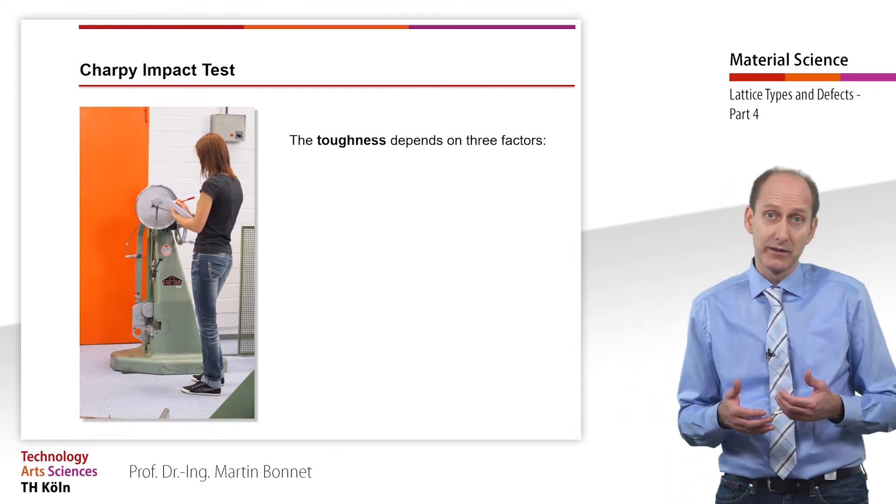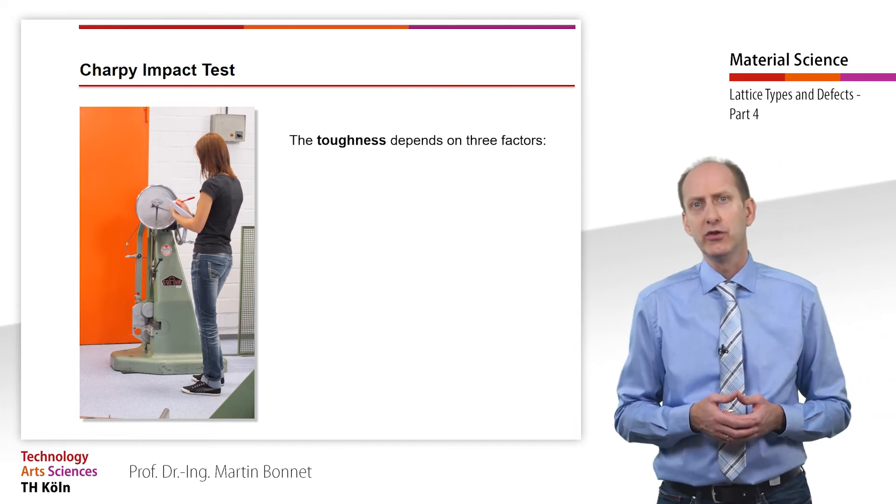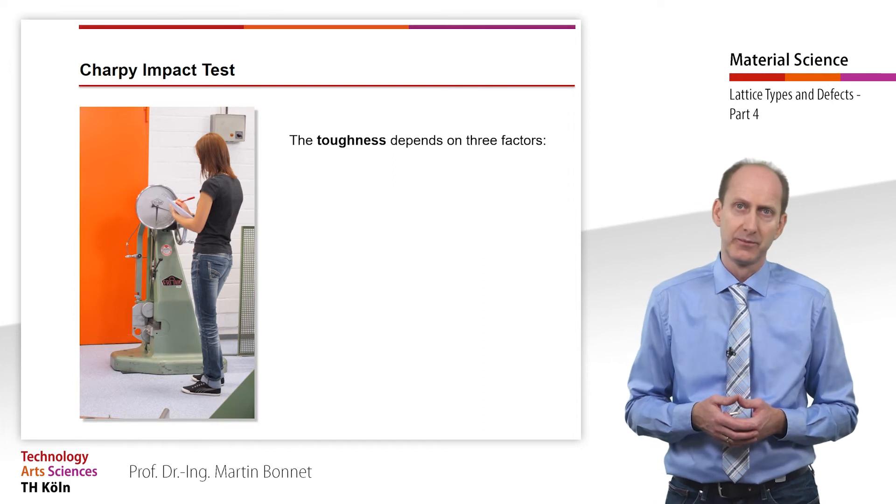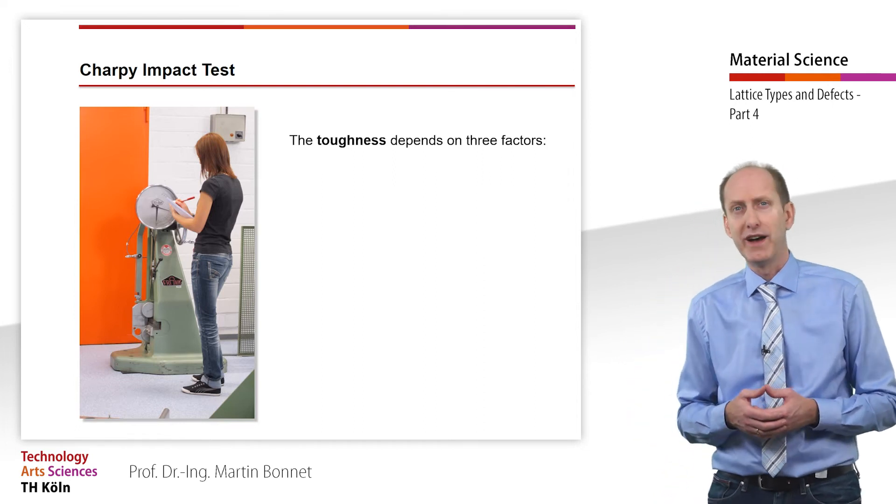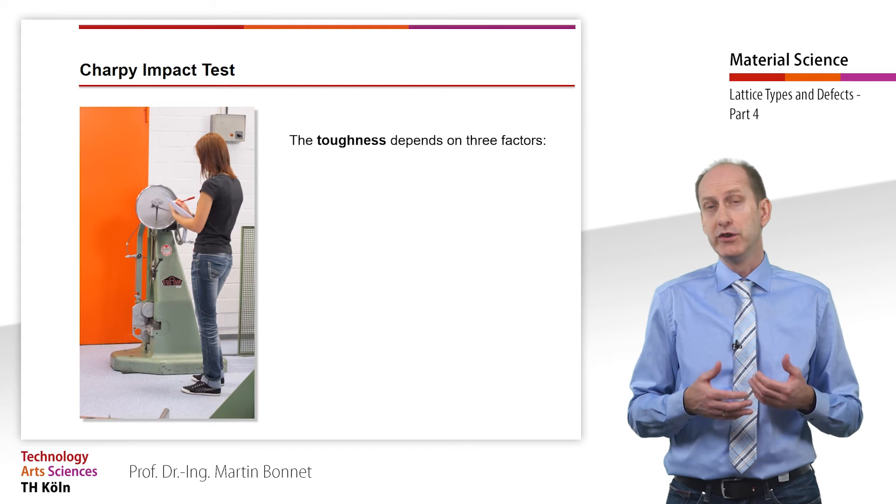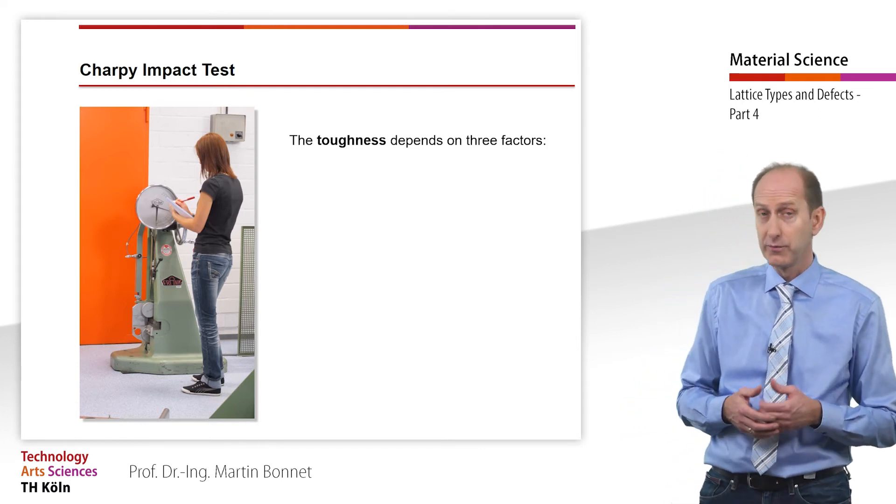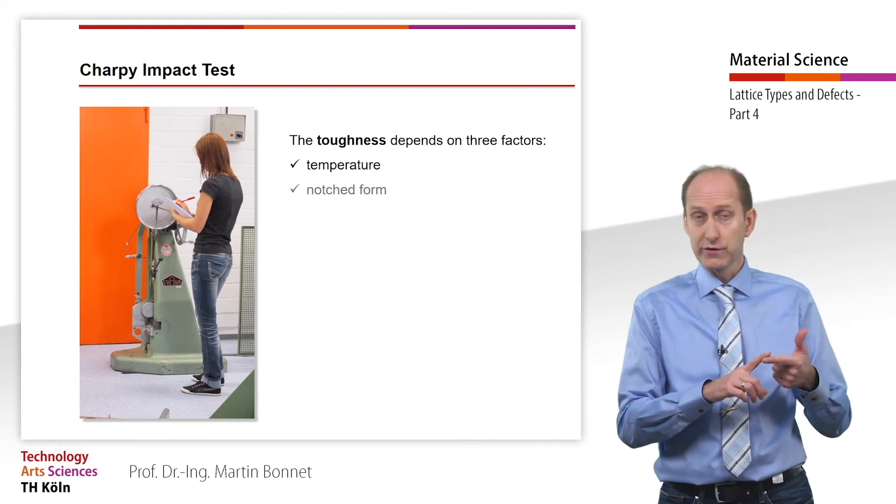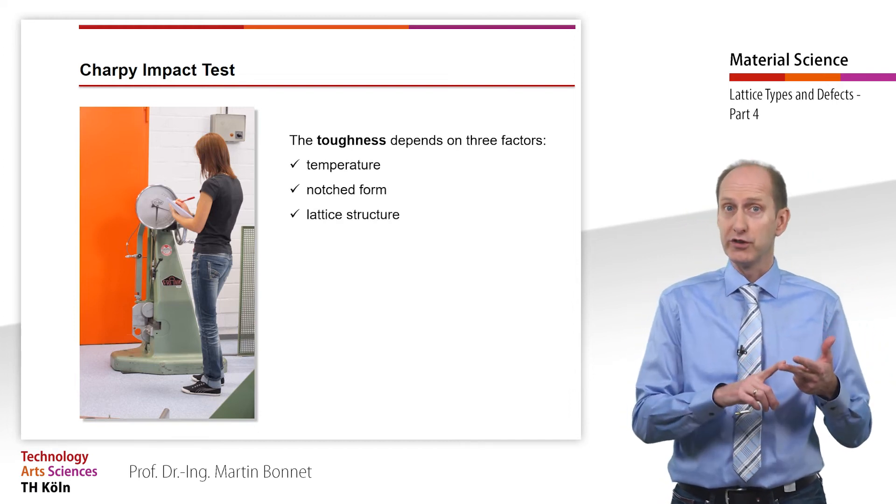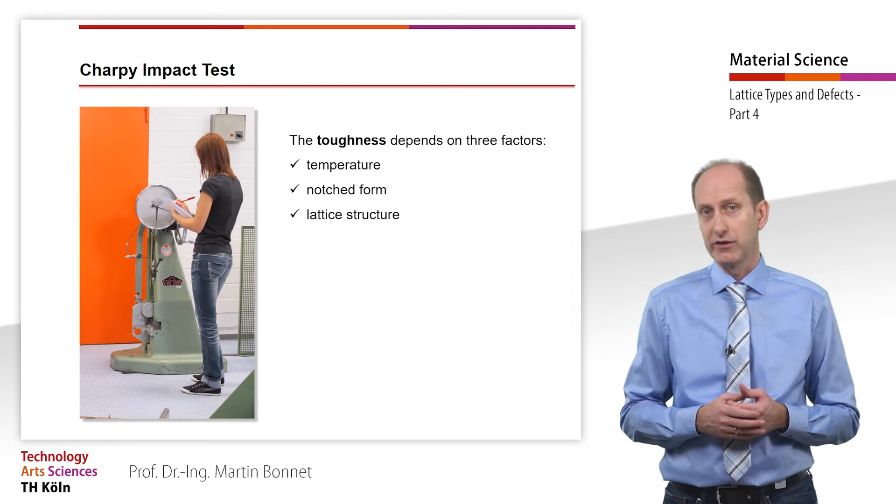Like the tensile test, the Charpy impact test is also a destructive material test method. This test method provides information about the material's resistance to sudden stress. The toughness depends on three factors: temperature, notched form, and the material's composition or the resulting lattice structure.